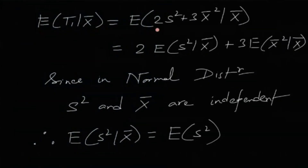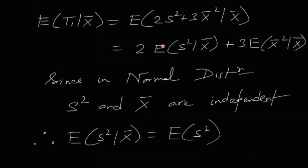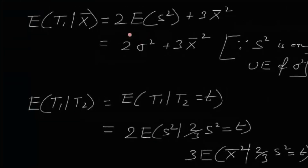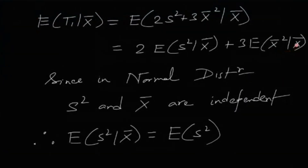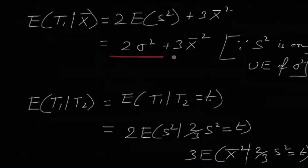Now, E[t1 | x̄] = E[2S² + 3x̄² | x̄] = 2·E[S² | x̄] + 3·E[x̄² | x̄]. Since in a normal distribution the sample variance and sample mean are independent, E[S² | x̄] = E[S²] = σ² (as S² is an unbiased estimator of σ²). And since x̄ is given, x̄² is a constant, so E[x̄² | x̄] = x̄². Therefore, E[t1 | x̄] = 2σ² + 3x̄².